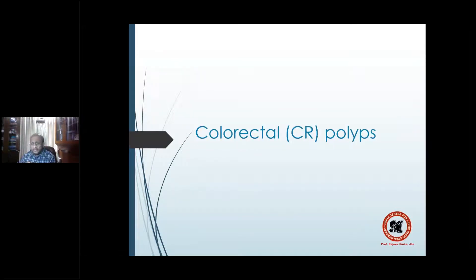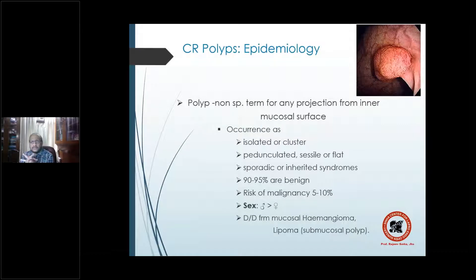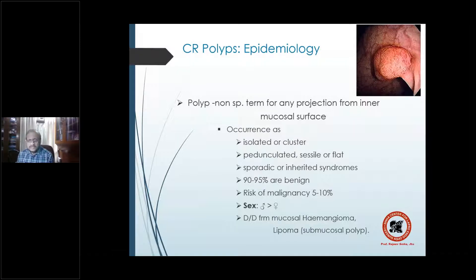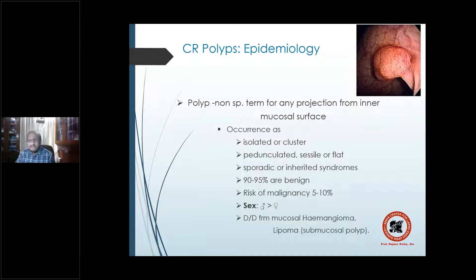A polyp is basically a non-specific term. It doesn't mean a disease in itself — it means any projection from an inner mucosal surface, occurring as isolated or in clusters, solitary or multiple. It could be pedunculated, sessile without a peduncle, or absolutely flat raised surface of the mucosa. It could be sporadic or part of an inherited syndrome.